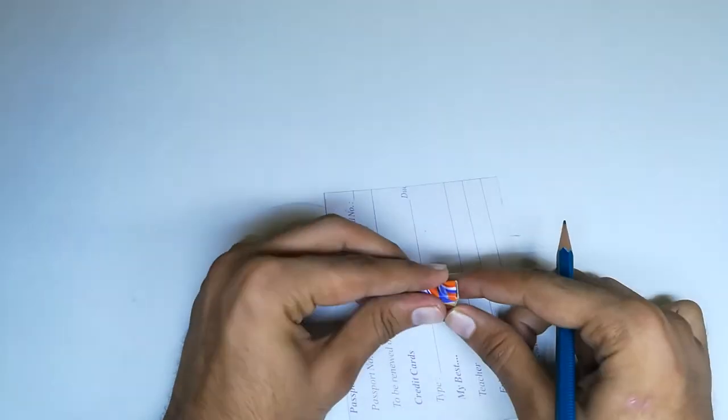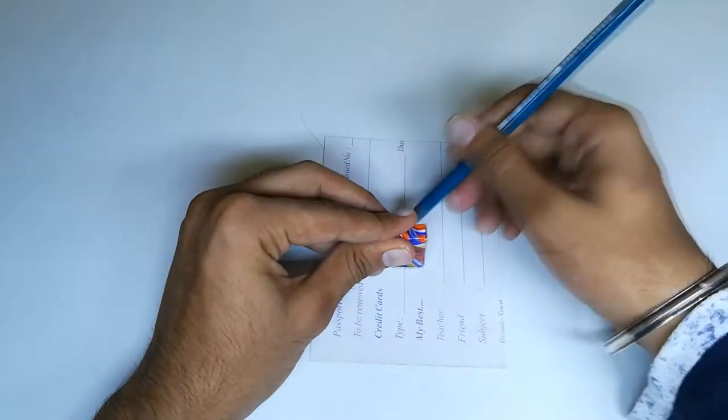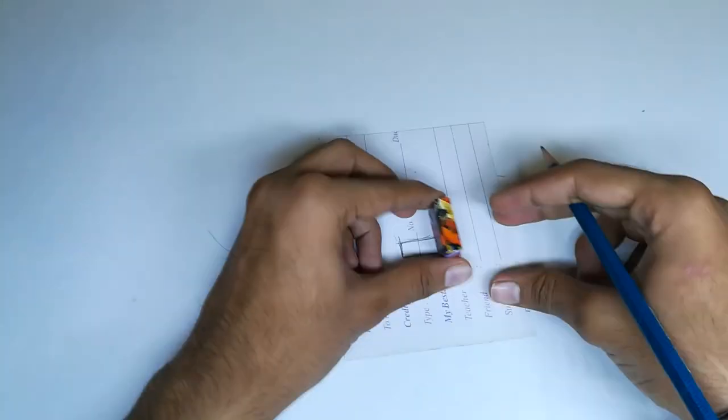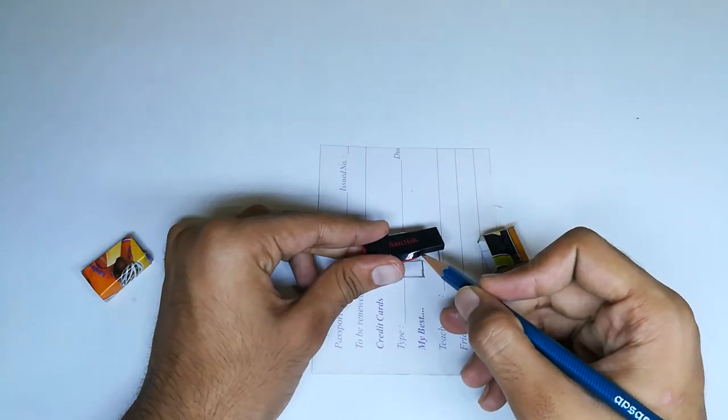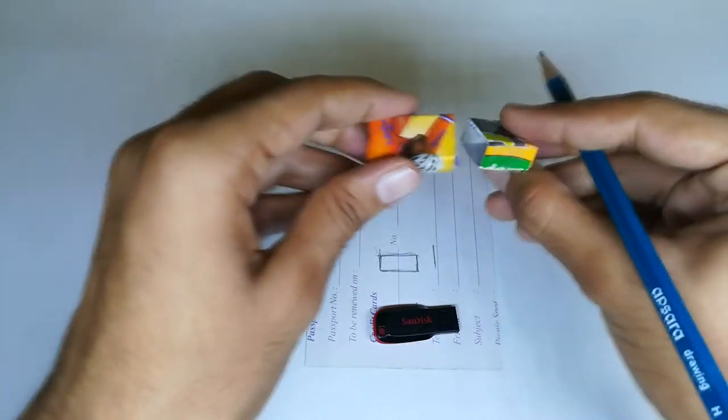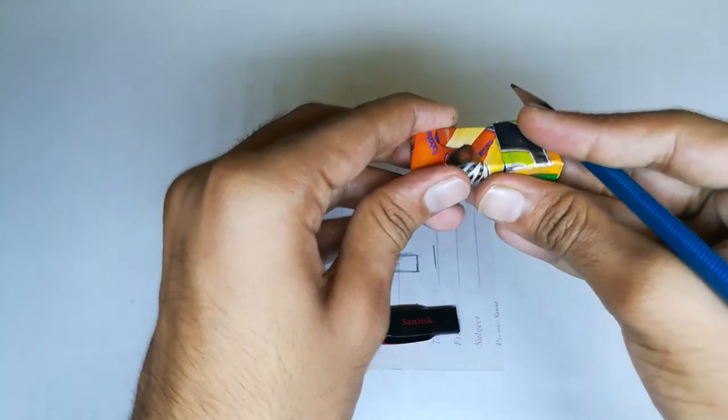In the same manner we have to make the cap for the box. So let's take the measurements. One thing to take care is while marking the height for the second box, take a little extra instead of just considering the upper part of the pen drive so that it holds the lower box properly.